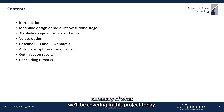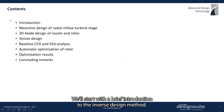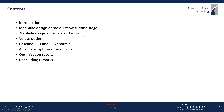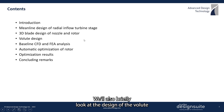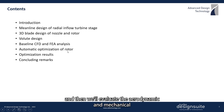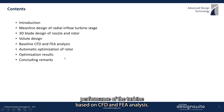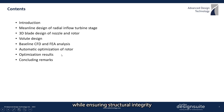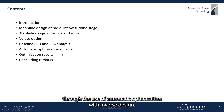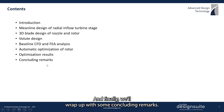Here's a summary of what we'll be covering in this project today. We'll start with a brief introduction to the inverse design method, then look at how the mainline design of a radial input turbine stage can be performed. We'll see how the nozzle and rotor can be designed using the 3D inverse design method, briefly look at the design of the volute, and evaluate the aerodynamic and mechanical performance based on CFD and FEA analysis. Then we'll see how the efficiency of the baseline rotor can be enhanced while ensuring structural integrity through automatic optimization with inverse design, and finally wrap up with some concluding remarks.